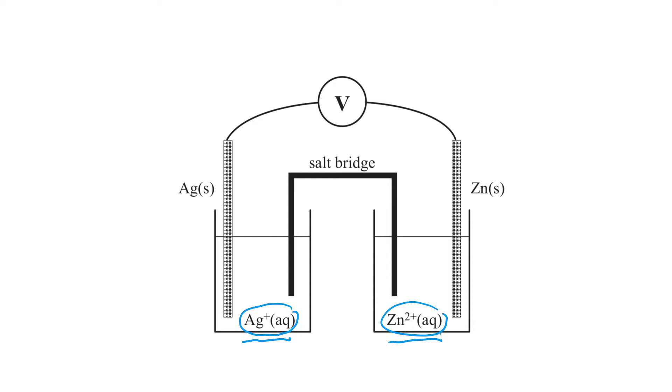In a galvanic cell and an electrolytic cell, the cathode is always the site of reduction. So in this case, our silver electrode will be our cathode. And the other one, the zinc electrode, will be our anode.